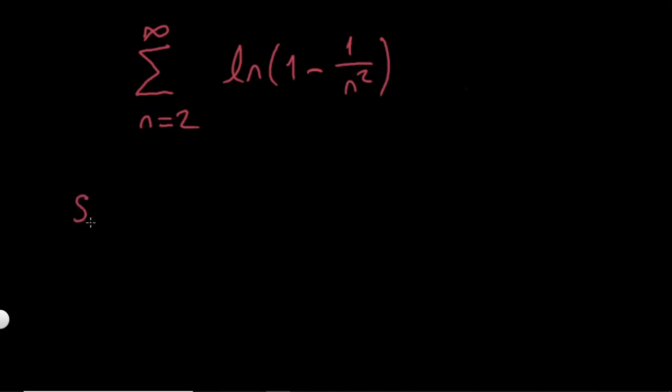we define a sequence that is sk. Instead of adding infinitely many terms, we just add up to k. n goes from 2 to k, ln of this sequence, 1 minus 1 over n squared. And I will try to find what is sk in general. And if I take this sk limit as k goes to infinity, this will be equal to my sum.